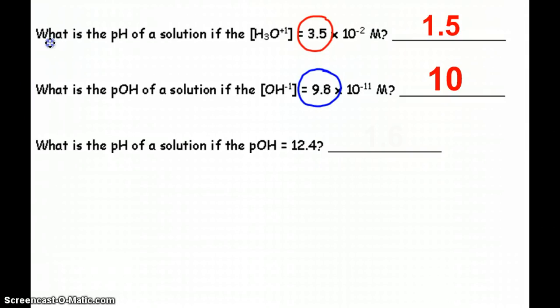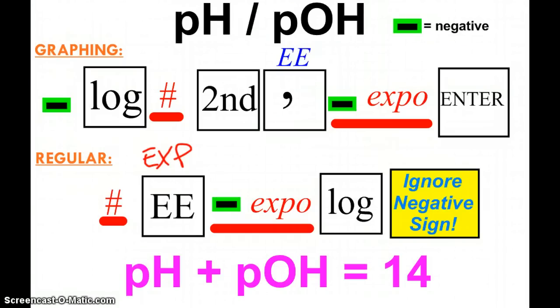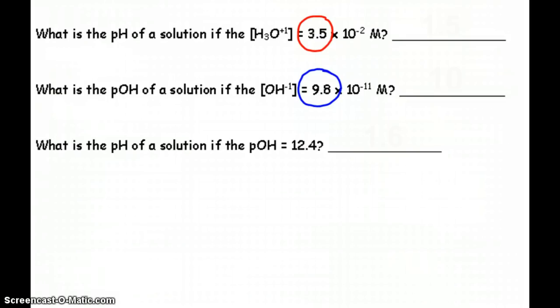Now the next question says, what's the pH of a solution if pOH is 12.4? We don't need to use the log for this, because we have our fantastic fact. pH plus pOH is always 14. So if pH plus pOH is always 14, if the pOH is 12.4, the pH is going to be 1.6, so it adds up to 14.